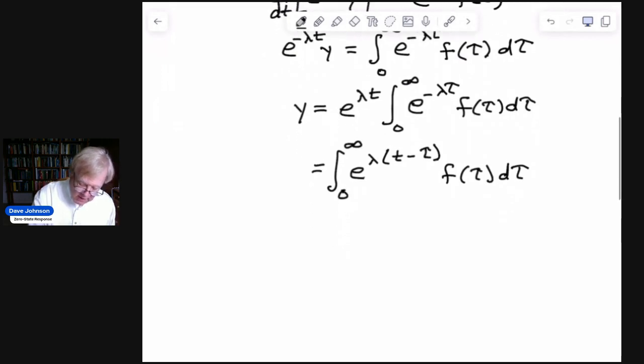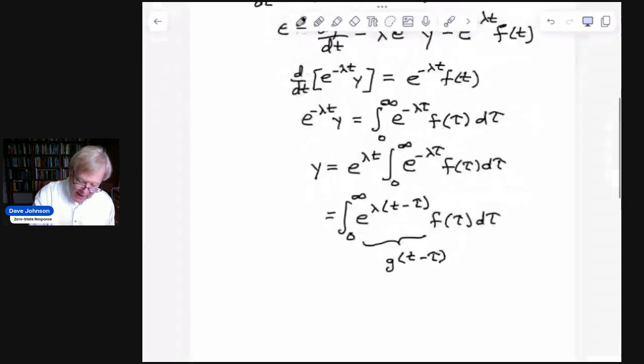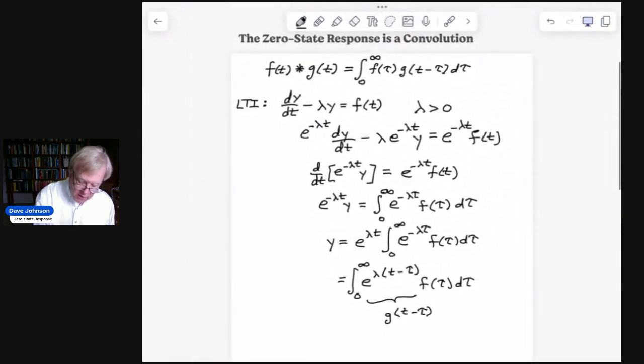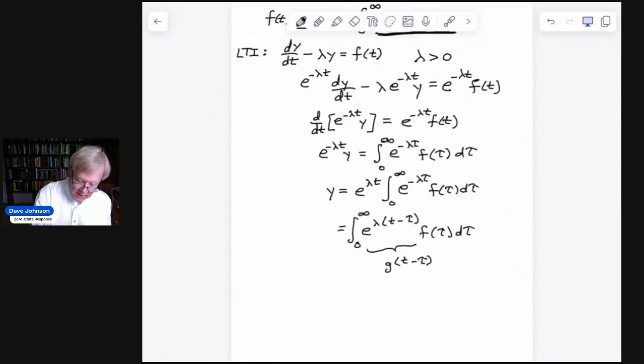But this is just a convolution, because if we let this be g of, let's say, t minus τ, and go back and review where this all came from. So these are the same things. So I can rewrite this as a convolution.